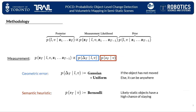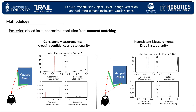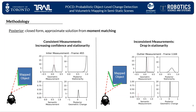We further model the measurement likelihood as a product of geometric and semantic terms. In particular, the geometric term is modeled as a Gaussian-uniform mixture, as we expect the geometric error to follow a zero-mean Gaussian if the object did not move. If the object has changed, then it could be anywhere. On the other hand, the semantic heuristic is modeled as a Bernoulli distribution, and the intuition behind this parameterization is that likely static objects, such as shelves, have a high chance of staying around. Putting everything together and applying moment matching, we can derive a closed-form approximate solution for the posterior.